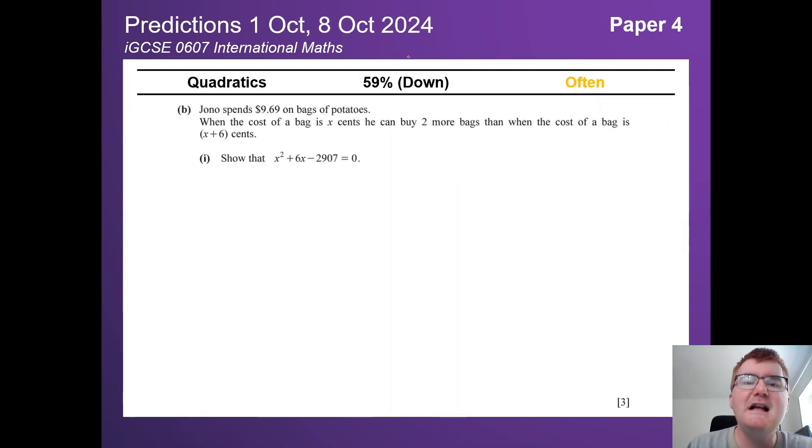On to quadratics, slightly down here at 59%. But like I said in my 0580 video, it can be quite sneaky. It can appear in different places. Here, we have to generate our quadratics from the information given in the question.